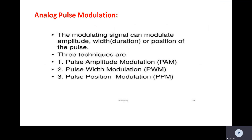We have different types of analog pulse modulation: pulse amplitude modulation, pulse width modulation, and pulse position modulation. In previous classes we discussed amplitude modulation and frequency modulation. The difference between normal amplitude modulation and pulse amplitude modulation is that in normal modulations we use a sinusoidal wave as a carrier signal, whereas in pulse modulation we use pulses in place of a carrier signal.